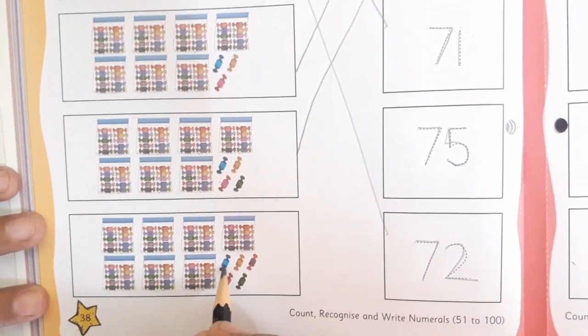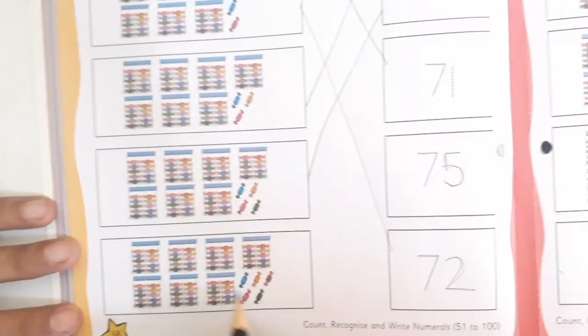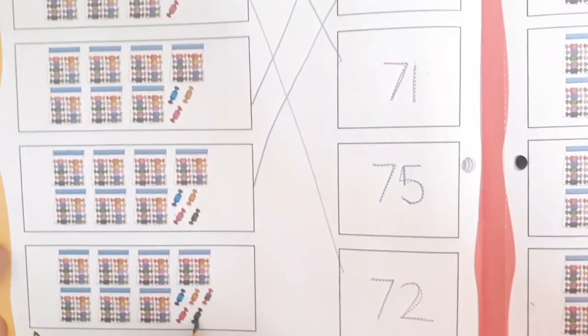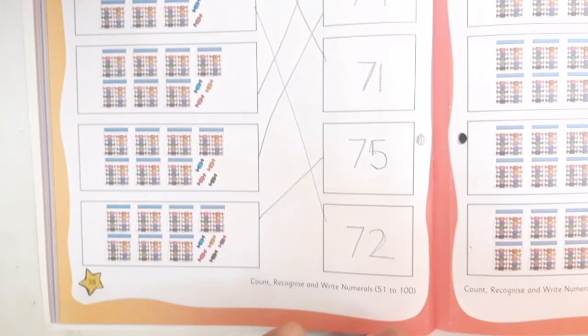Now here 70 packets and 1, 2, 3, 4, and 5 more chocolates. 71, 72, 73, 74, and 75. This way we are going to match the count with the correct numeral.